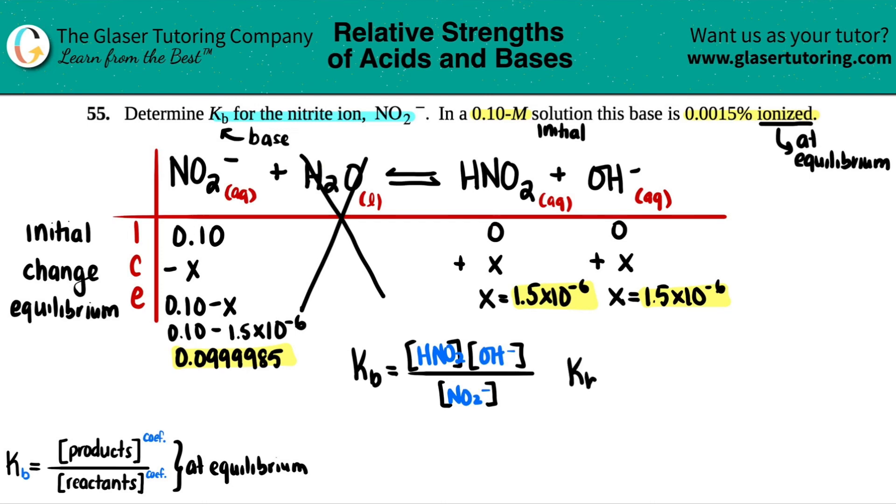Now we're just going to plug in the values. We have 1.5 times 10 to the negative 6, another 1.5 times 10 to the negative 6, and then we have 0.04 nines 8, 5. 1.5 times 10 to the negative 5 times that divided by that answer and two sig figs. So 2.3 times 10 to the negative 11th.